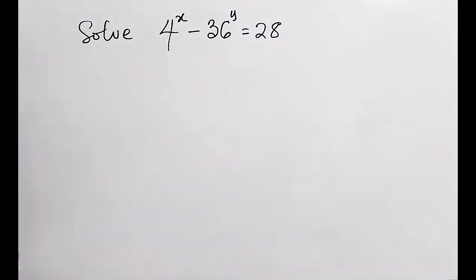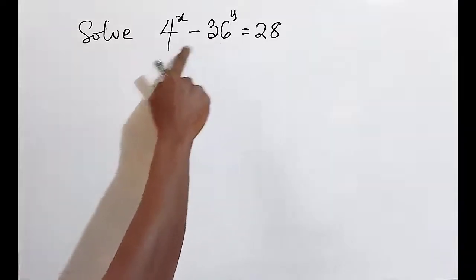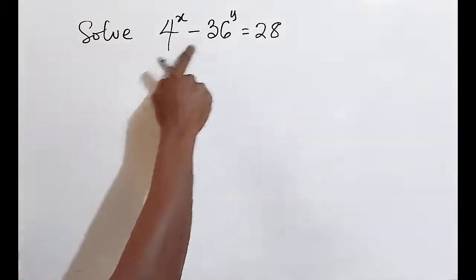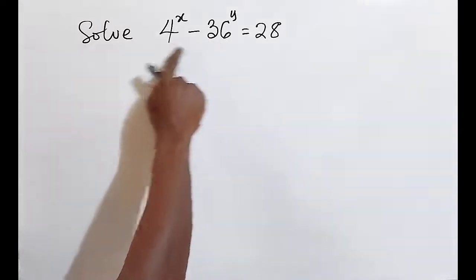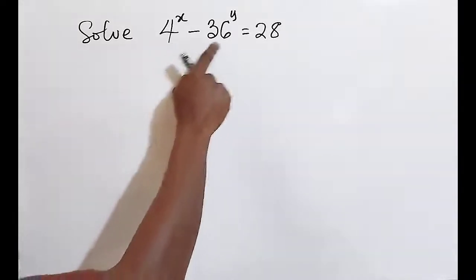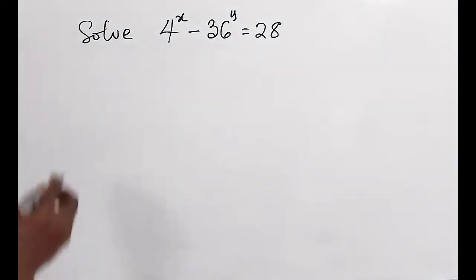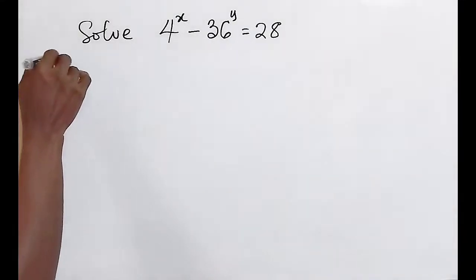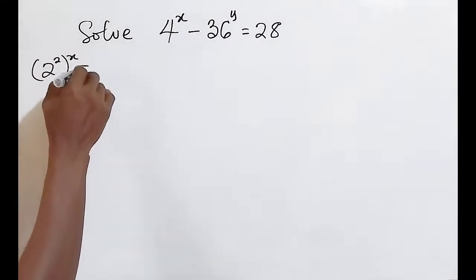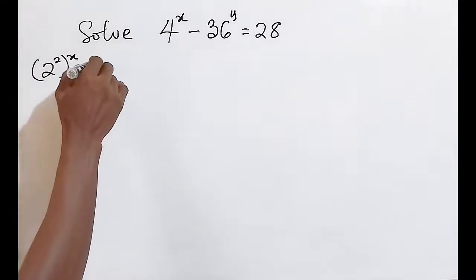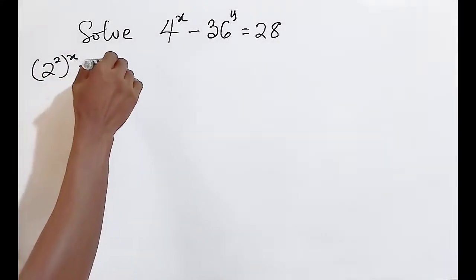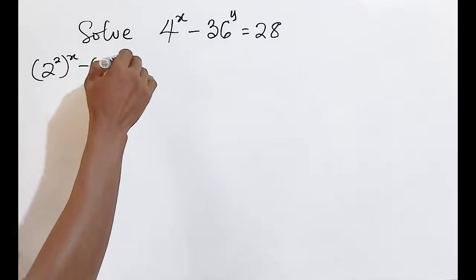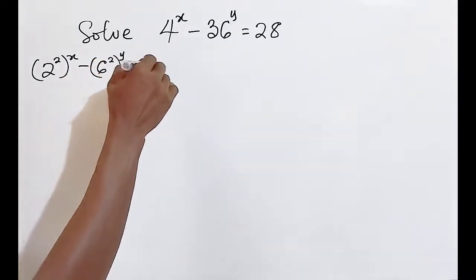For us to solve this, let's reduce these two to the base of 2 and 6 respectively. In that case, we have 2 raised to the power of 2, to the power of x, minus 6 raised to the power of 2, to the power of y, equals 28.